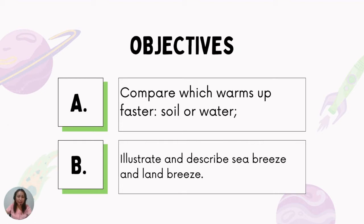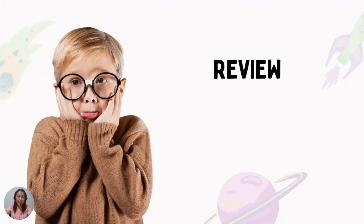So for the objectives of this lesson, you will compare which form heats faster — soil or water — and illustrate and describe sea breeze and land breeze.